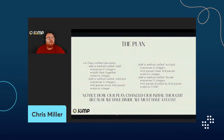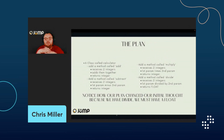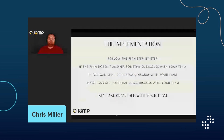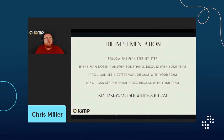Even in this simple example, taking the time to think and put it on paper can highlight problems in our initial thoughts. Once we've done that, follow the plan step by step. If the plan doesn't answer something when you get to it, discuss it with your team. If you can see a better way, discuss it with your team. If you can see potential bugs, discuss it with your team. The key takeaway is: talk to your team.